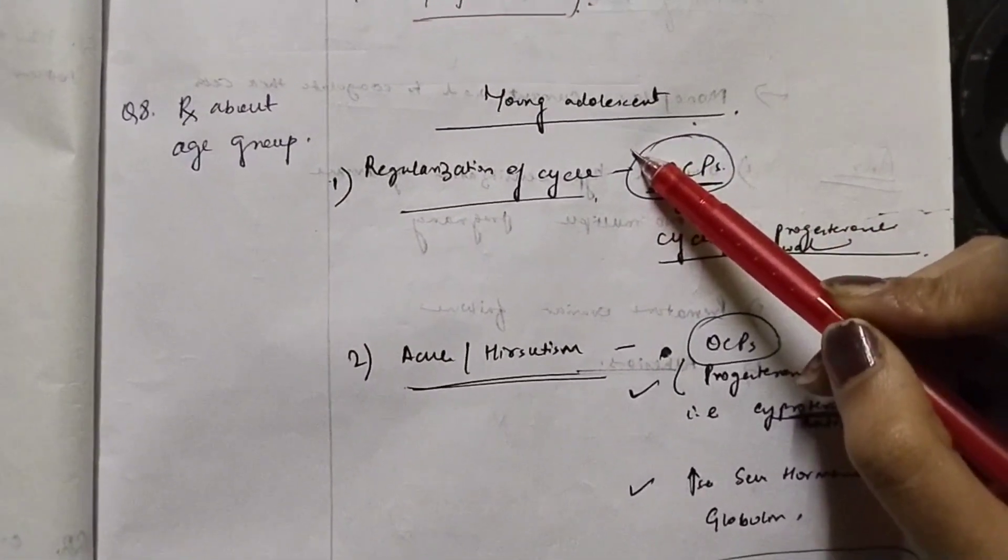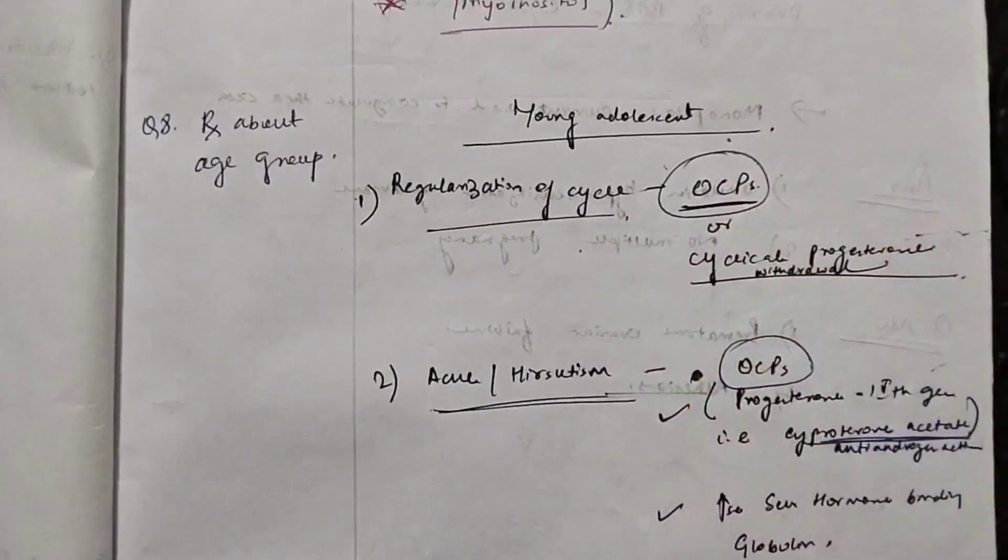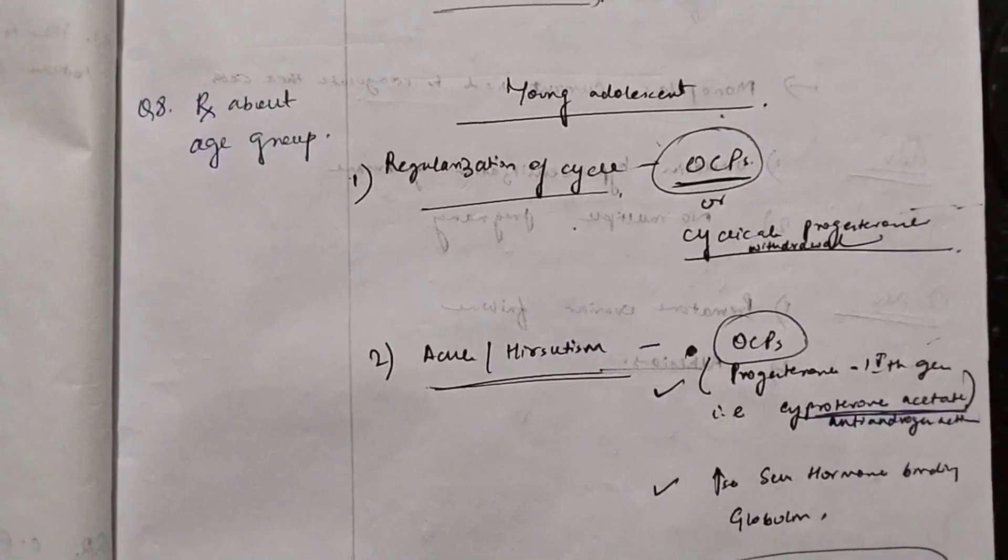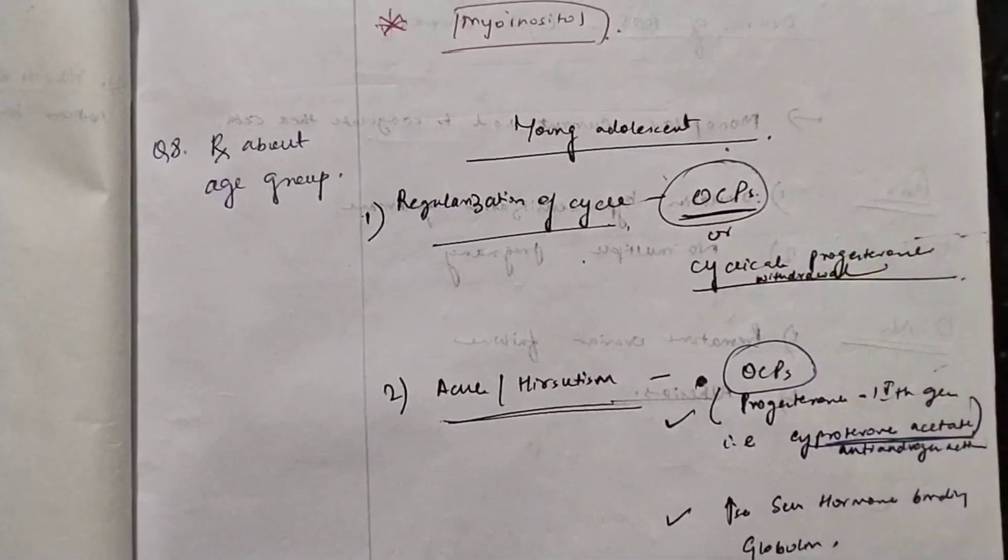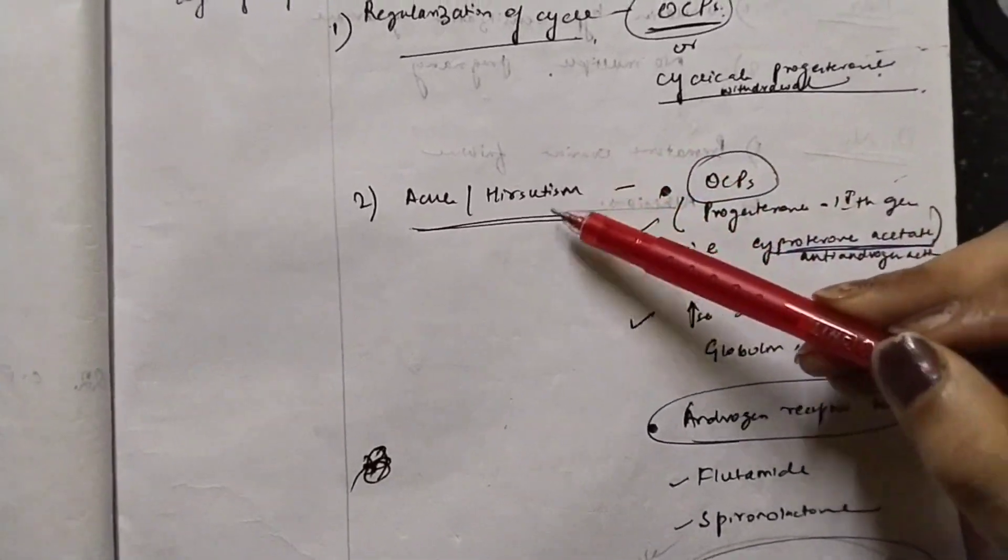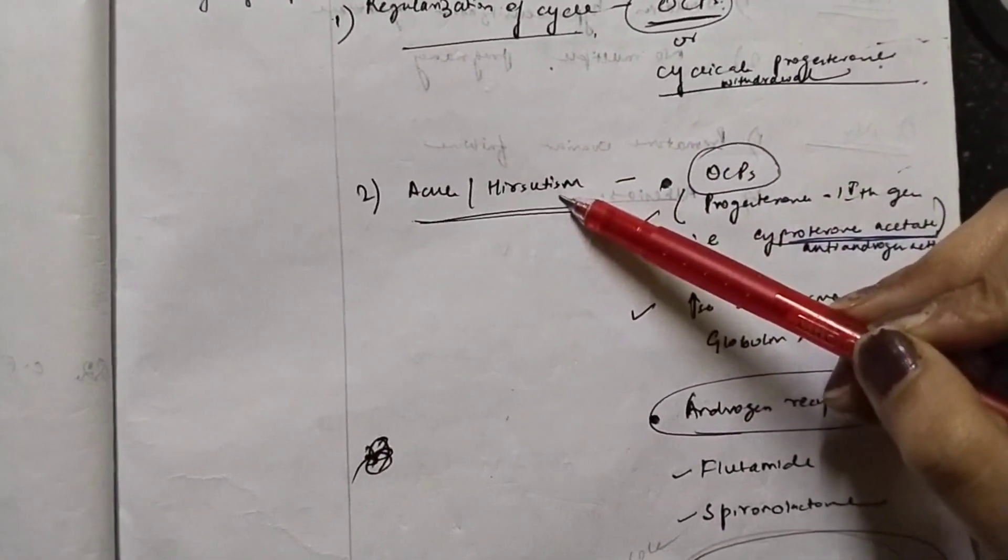If there are young individuals, we have to regularize the cycle because we know that there is amenorrhea, there is oligomenorrhea, depending upon the female. For regularizing the cycles, you can give OCPs or you can give cyclical progesterone withdrawal.